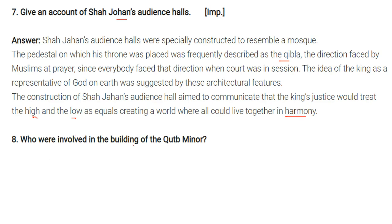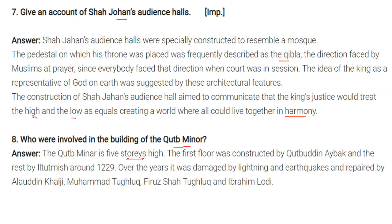Question: Who was involved in building the Qutub Minar? The Qutub Minar is a five-storey high structure. The first floor was constructed by Qutbuddin Aibak and completed by Iltutmish around 1229. Over the years it was damaged by lightning and earthquakes and repaired by Alauddin Khilji, Muhammad Tughlaq, Firuz Shah Tughlaq, and Ibrahim Lodi.